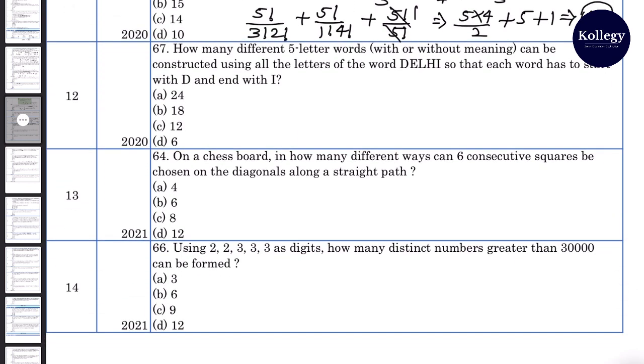Question number 12. How many different 5 letter words with or without meaning can be constructed using all the letters of the word DELHI so that each word has to start with D and end with I? D se shuru hoona hai, I pe khatam hoona hai. So we can exchange 3 letters positions E, L, H, which is 3 factorial. That will be 3 into 2 into 1, which is 6. The answer is A.